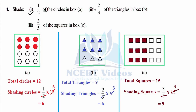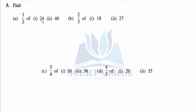Two by three of the triangles: count the triangles — total is nine (three times three). Two by three times nine — cutting: three to nine — shade six triangles. For the squares: five times three is fifteen total squares. Three by five of fifteen — one five is five, three five is fifteen, three threes are nine — shade nine squares.